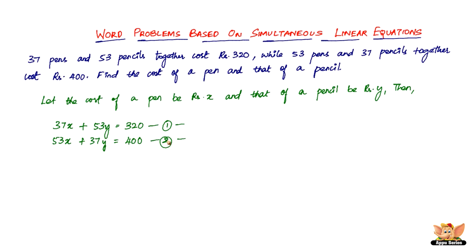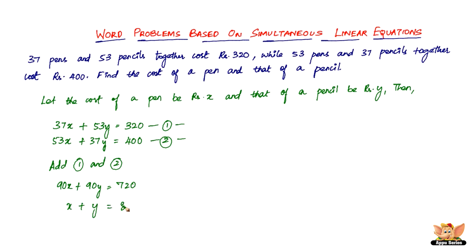There is a simple method for simultaneous linear equations with large numbers. The first step is to add equation one and equation two. We get 37x plus 53x equals 90x, and 53y plus 37y equals 90y, and 320 plus 400 equals 720. Since 90 is a factor of 720, dividing throughout by 90 gives us x plus y equals 8.